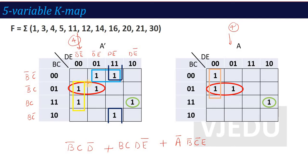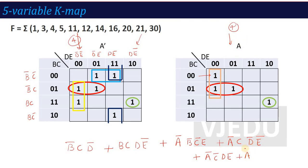Individual K-map में: जब आप first K-map (A-bar) में हों, तो A-bar पहले लिखते हैं। Blue pair के लिए: common row is B-bar C-bar, common column is E — so the value is A-bar B-bar C-bar E. Yellow pair के लिए: A-bar पहले, फिर row common is C-bar, column common is D and E — so A-bar C-bar D E. Second K-map (A) के लिए: A पहले आएगा, फिर common row B-bar, common column D-bar E-bar — so A B-bar D-bar E-bar.